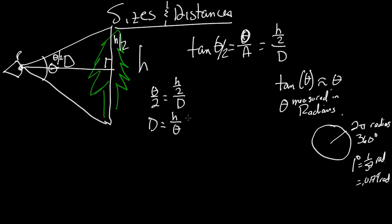Now, that tells you that the distance of the object is inversely proportional to its angular size, how big it appears.